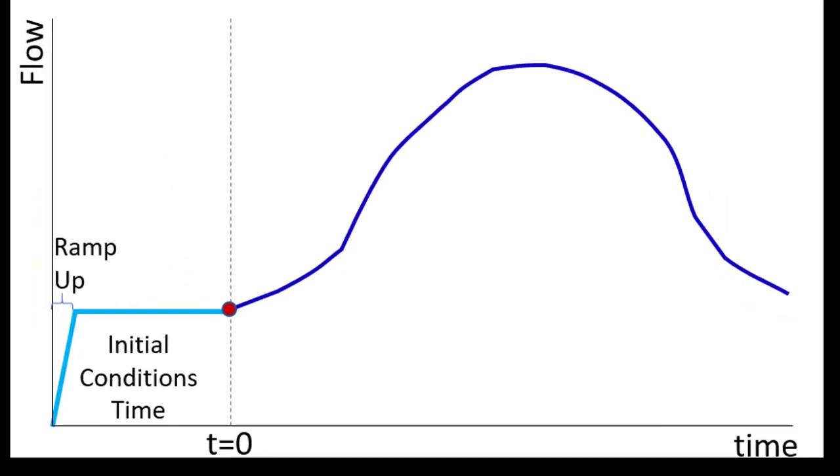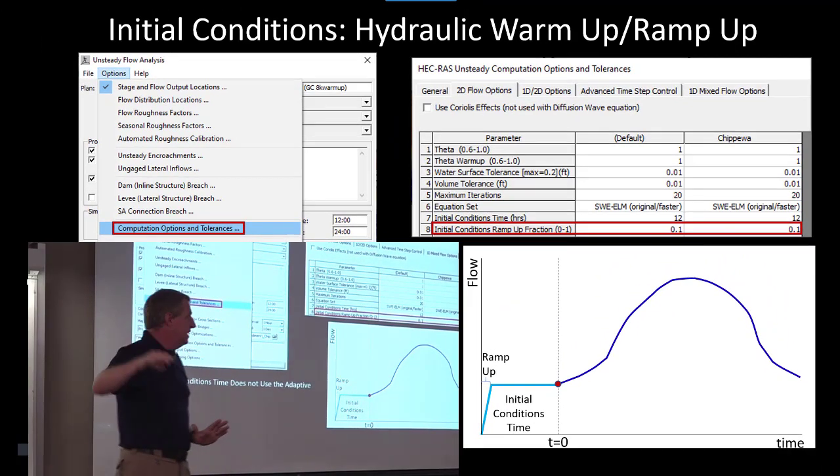And so 0.1, 0.2, you can hit 0.5 if you want to kind of get there slowly. If your model is unstable in the warm-up time, this is a good way to kind of sneak up on it and then reach a steady state.